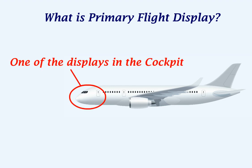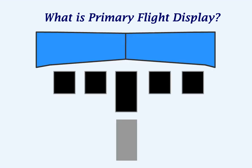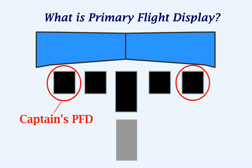A PFD is one of the displays in the cockpit. Inside the cockpit, if we have a normal display configuration, the outermost display is a PFD. There are two PFDs — one for the captain and one for the first officer.